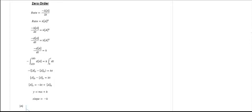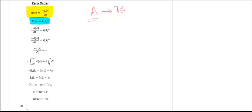We're going to look at these one column at a time. This first column is a zero order reaction. Here is our rate definition, and you'll notice the rate is negative. For this worksheet, we're assuming A is our reactant turning into B. So the rate is negative because A is a reactant — it's the negative change in concentration of A over change in time. For zero order, it's the rate law constant k to the zero power.